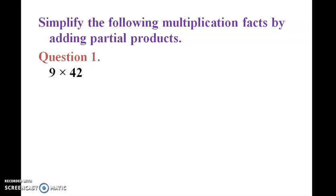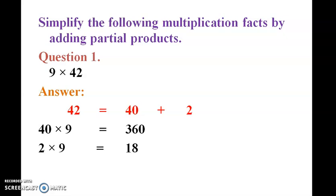Question number 1: 9 into 42. What do we do now? 42 is 40 plus 2. So 40 into 9, multiplied by 9, into 2, multiplied by 9. So 360 plus 18. So the answer is 378. This is the answer.